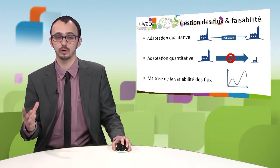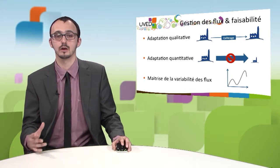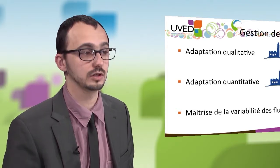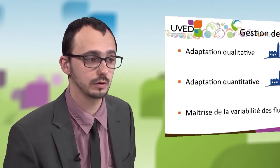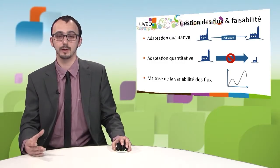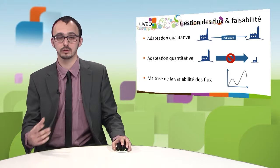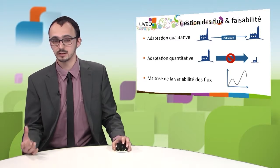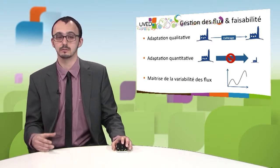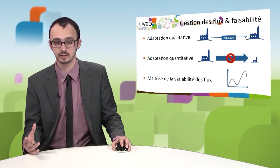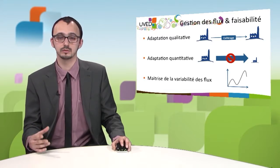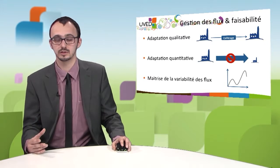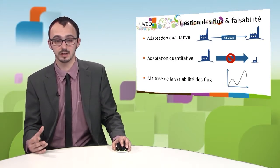A flow also needs to be available in the appropriate order of magnitude. When the flow is too large relative to demand, we need to find different outlets and identify different recycling processes. But when supply is below demand, industry will have to find other sources of raw material. Companies also need to be in a position to control variability in supply.